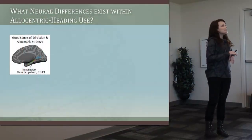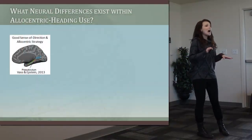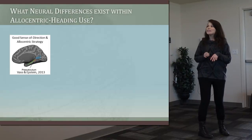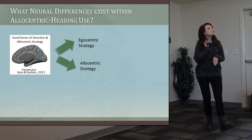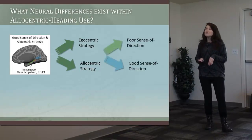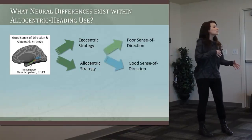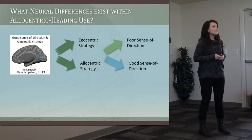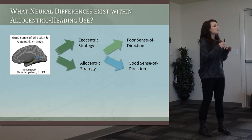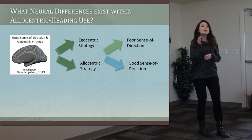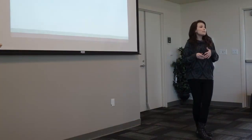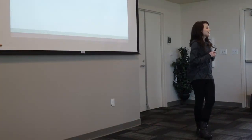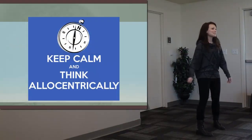From neuroscientific research, we've learned that allocentric headings are coded in the presubiculum. But it's unknown how strategy differences and differences in sense of direction actually change the coding of these signals in the brain. Right now I'm conducting an fMRI experiment to determine how strategy differences and individual differences are coded in the brain when you think about allocentric headings. Thank you very much.